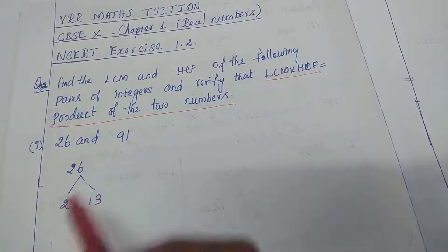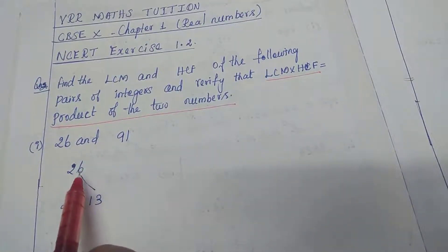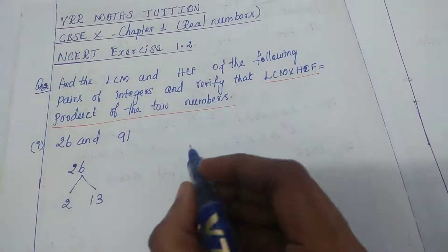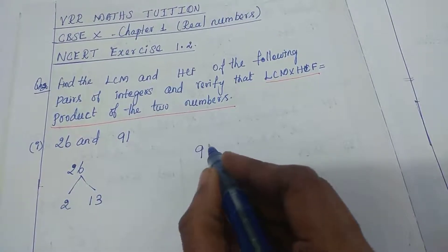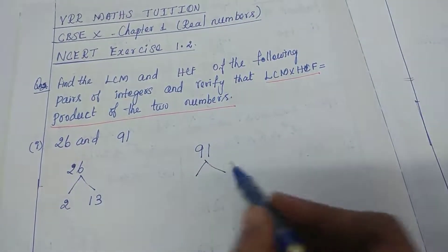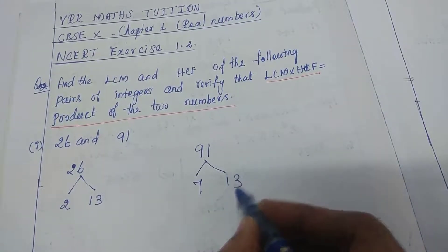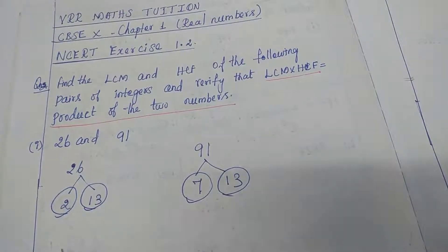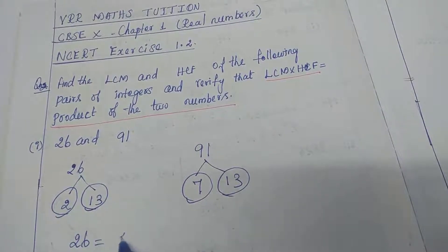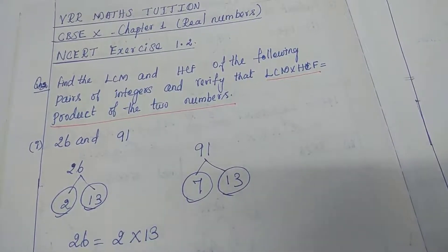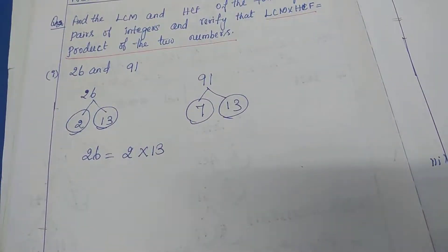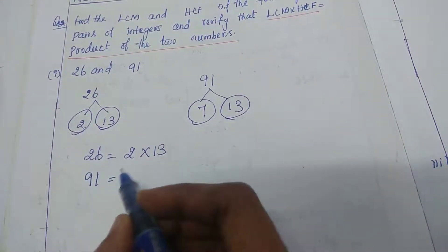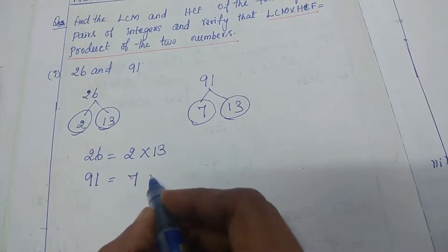Finding the prime factors: 26 is equal to 2 into 13. Then 91 — the number 91 can be split into 7 into 13. So 26 equals 2 into 13, and number 91 equals 7 into 13.